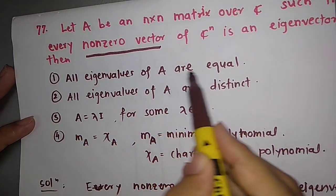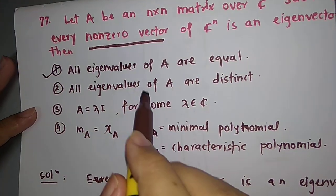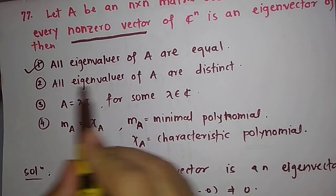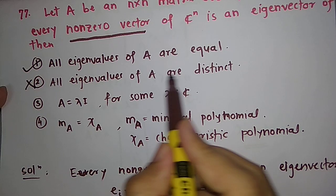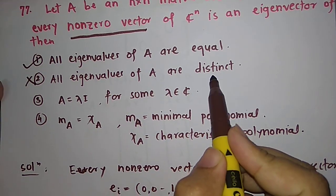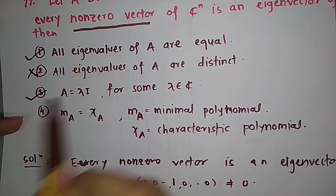All eigenvalues of A are equal. So this will be correct because all the diagonal entries are λ and consequently the second option is false because it is saying that eigenvalues are distinct. And again A is equal to λI, this is also correct because we have got that A is a scalar matrix.